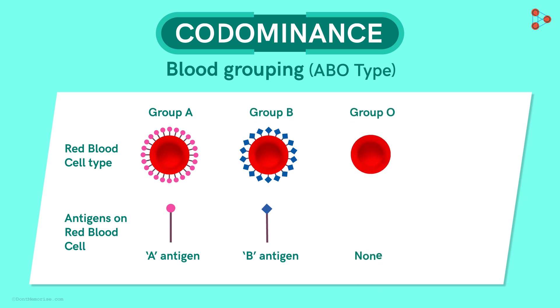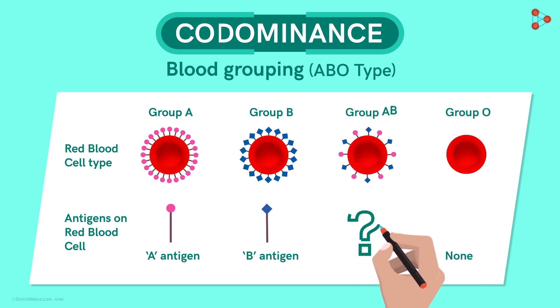In case of O, there are no antigens present at all. And now can you guess which antigen will be present on the RBCs if the group is AB? That's right! The RBCs will have both the antigens A and B present on their surfaces.